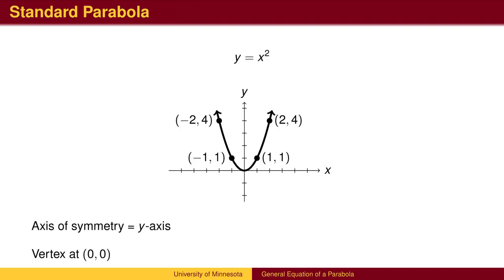The standard parabola is y equals x squared. The y-axis is the axis of symmetry. The parabola looks the same to the left of the y-axis as it does to the right of the y-axis. The point on the axis of symmetry which divides the parabola into two equal branches is called the vertex, which in this case is at the origin.